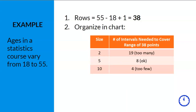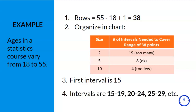Step 3 is to decide on the first interval. Since ages range from 18 to 55, then 18 is our lowest score. Recall that rule number 3 states that the interval must start at a multiple of the interval size, so we cannot start at 18. We have to start at 15, which is a multiple of 5. Step 4 is to create the intervals for the frequency table. Starting at 15 with an interval size of 5, the first interval would be 15 to 19, which contains the values 15, 16, 17, 18, and 19 — a total of 5 numbers.